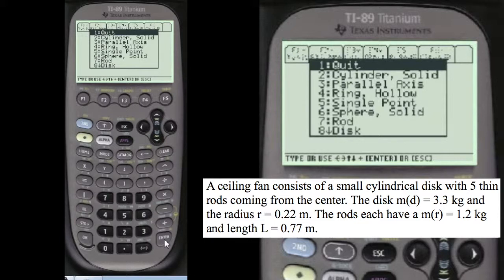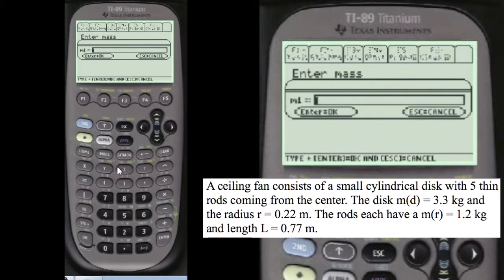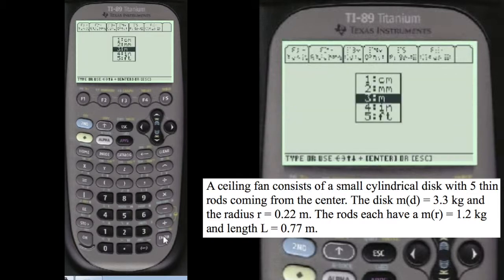We're going to scroll up to moments of inertia. And the first question, number one, is the moment of inertia of the rod. So let's go number seven. And we're going to enter what's given. You have to press alpha before you enter anything in these entry lines in my programs. So we're going to alpha, 1.2 kilograms. And the length is alpha, 0.77 meters, number three.